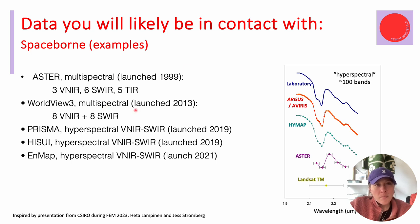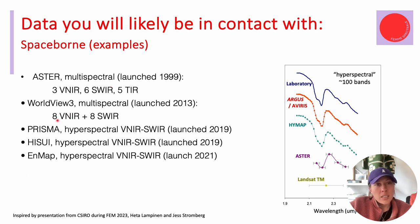Worldview-3 is multispectral. It's very close to ASTER's spectral resolution and has channels in the visible-to-near infrared sphere. PRISMA, HISUI, and NMAP are the ones most likely available to you in datasets. I also forgot GAOFIN-5, the Chinese satellite, but I think it's on another slide.